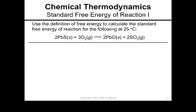Now let's calculate the standard free energy of reaction for the same equation at 25 degrees Celsius. It says use the definition, which means use the mathematical definition. In other words, Delta G equals Delta H minus T Delta S. The free energy change equals the enthalpy change minus the temperature times the entropy change.